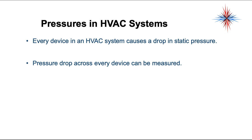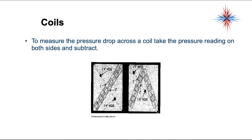Every device in an HVAC system causes a pressure drop — a drop in static pressure. Every pressure drop across every device can be measured. Filters, A-coils, heat exchangers, bends in ductwork, dampers — every device in the airstream causes a drop in static pressure. To measure the pressure drop across a coil, take pressure readings on both sides and subtract the two. That gives you your pressure drop. To take a pressure drop across anything, take a reading on one side, take a reading on the other side, and subtract the two numbers.